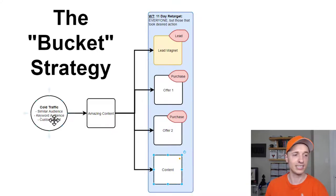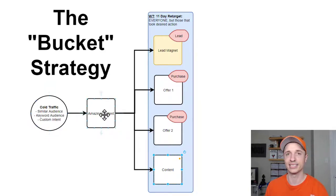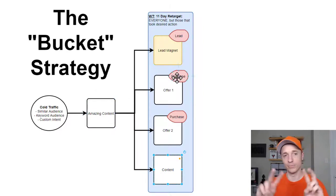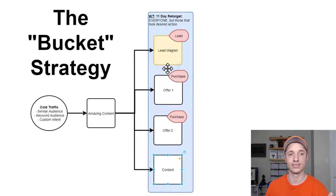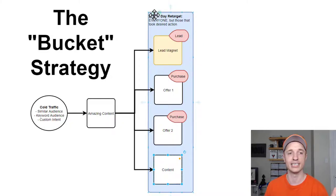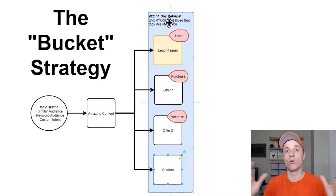That's pretty much the strategy — it's pretty simple. Basically, you have cold traffic, you're warming them up by showing them amazing content, whether that's on your website or on YouTube. Anybody that engages with your amazing content winds up in your bucket where you show them different offers — lead magnets, products and services, or additional content — for a set number of days: 3, 7, 11, 30, whatever it might be. And that's the whole thing.